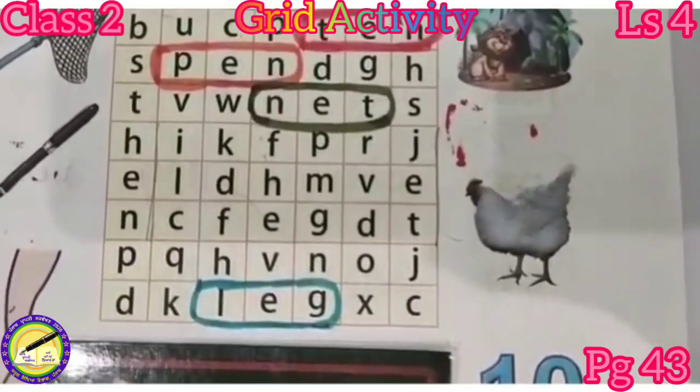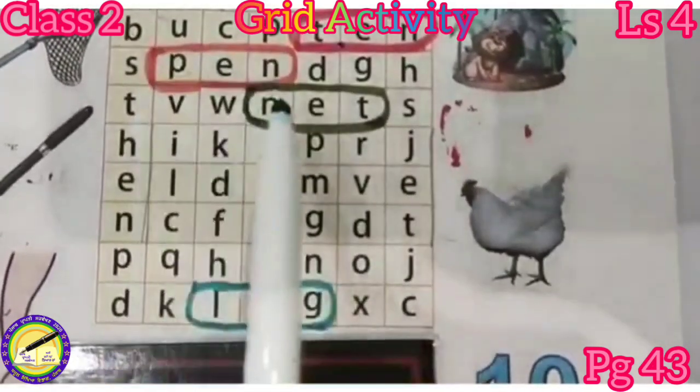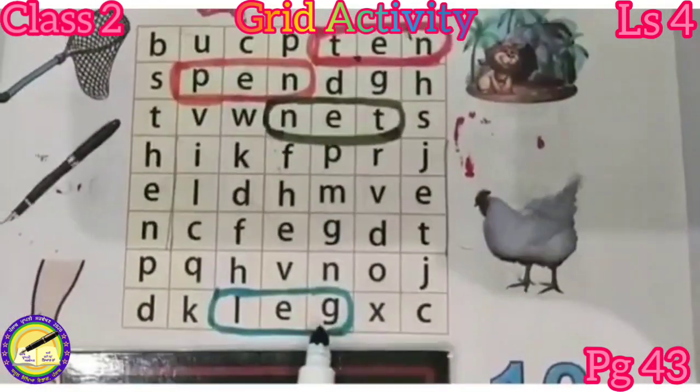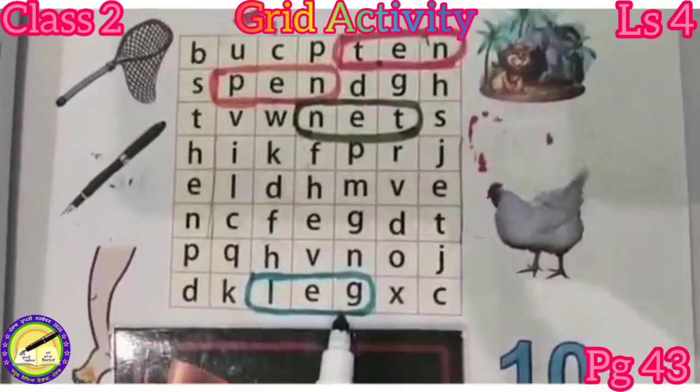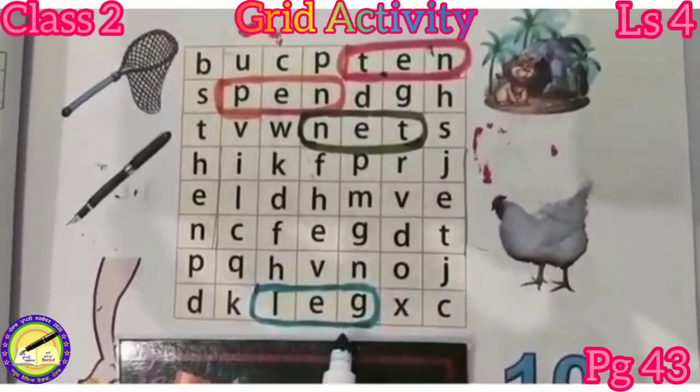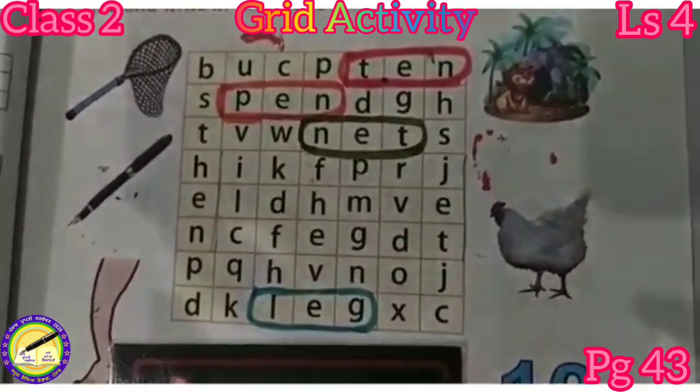Just now you got 1, 2, 3, 4 words in the horizontal way. Now we will start the vertical way.